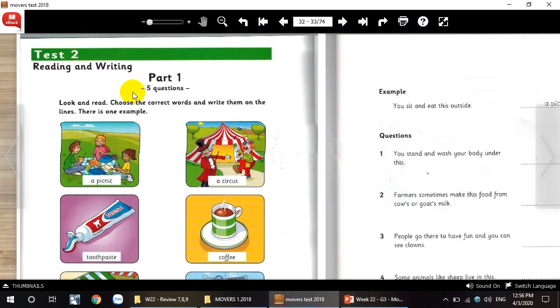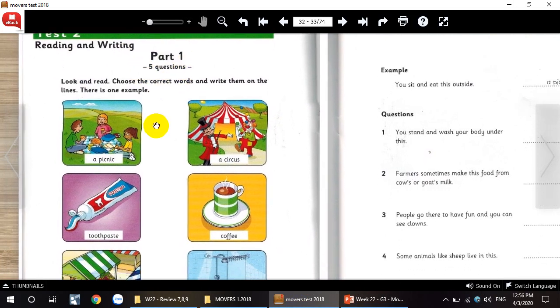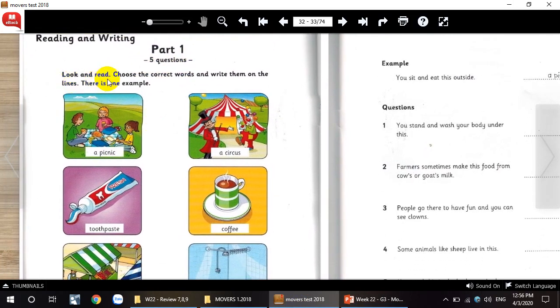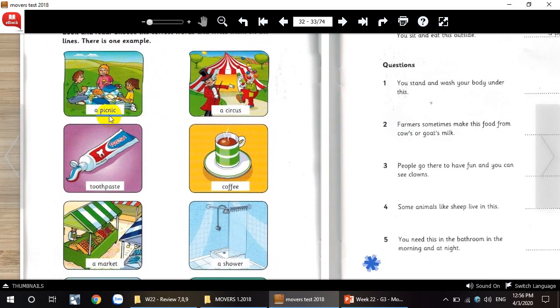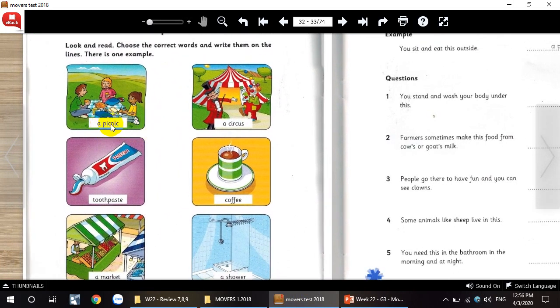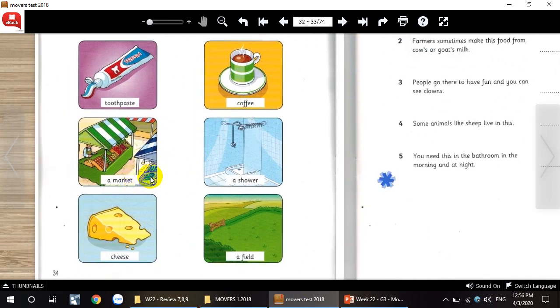Today we learn text 2, reading and writing. First, let's take a look at part 1. Look and read. Choose the correct words and write them on the lines. There's one example. Let's take a look at these pictures here. The first picture: a picnic, a circus, toothpaste, coffee, market, a shower, cheese, a field.